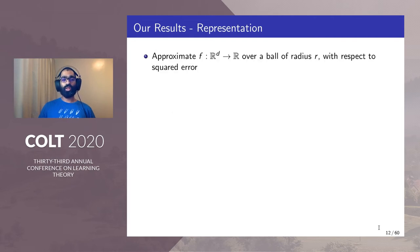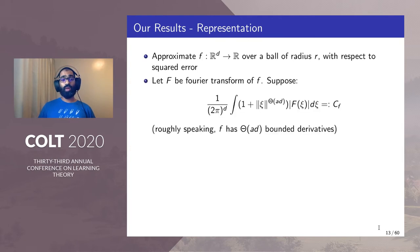Coming to our results on representation, we want to approximate a real valued function over a ball of radius r in ℝ^d with respect to the squared error. We consider the following decay condition on the tail of the Fourier transform. This is the standard assumption.